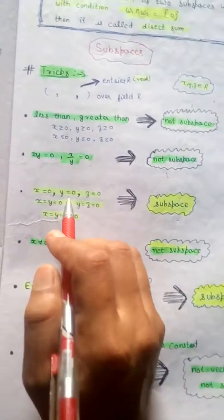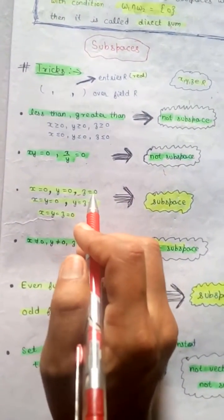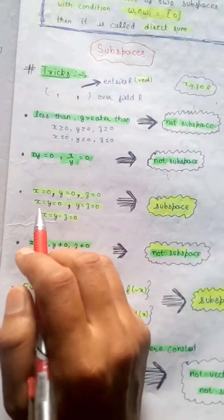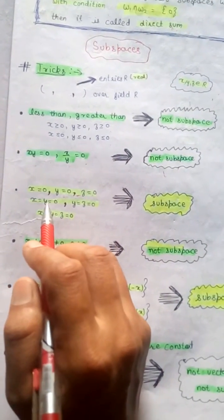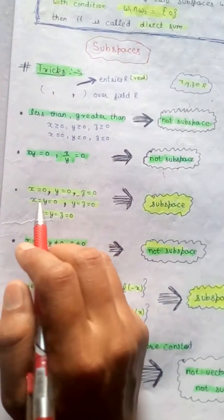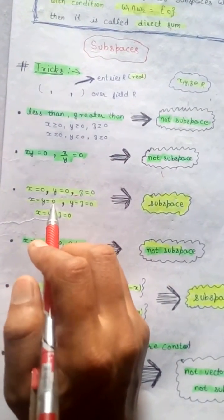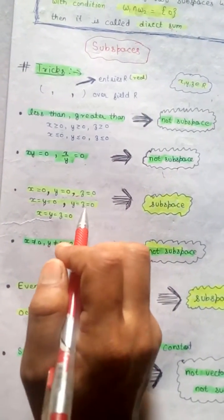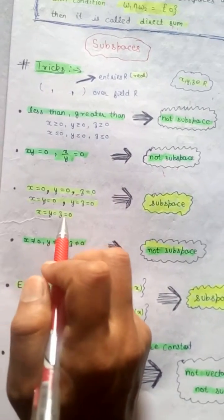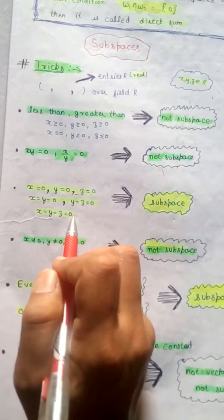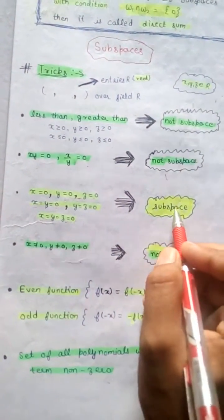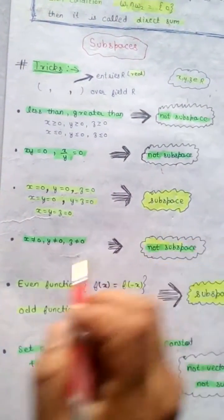If x equal to 0, y equal to 0, z equal to 0, or x equal to y equal to 0, or y equal to z equal to 0, or x equal to y equal to z equal to 0, then these are subspaces.